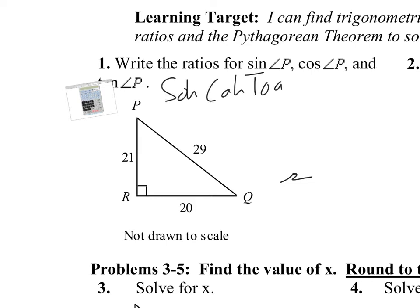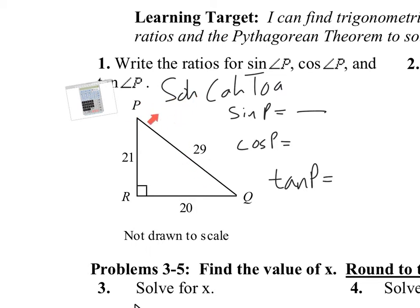We have sine, cosine, and tangent. Sine is opposite over hypotenuse — that's the definition. We start from angle P because that's the angle we were given. The opposite is 20 and the hypotenuse is 29, so sine of P is 20 over 29.